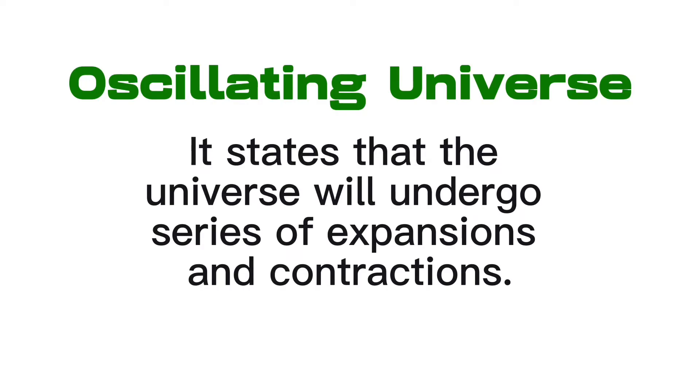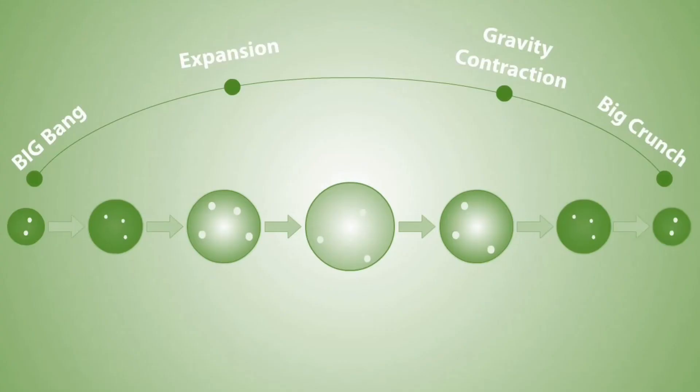Another theory is the theory of the oscillating universe. It states that the universe will go through a series of expansions and contractions. As shown in this diagram, expansion or Big Bang will occur, resulting in the formation of the universe, but eventually it will contract and collapse in an event called the Big Crunch. This process is a cycle and will happen repeatedly.